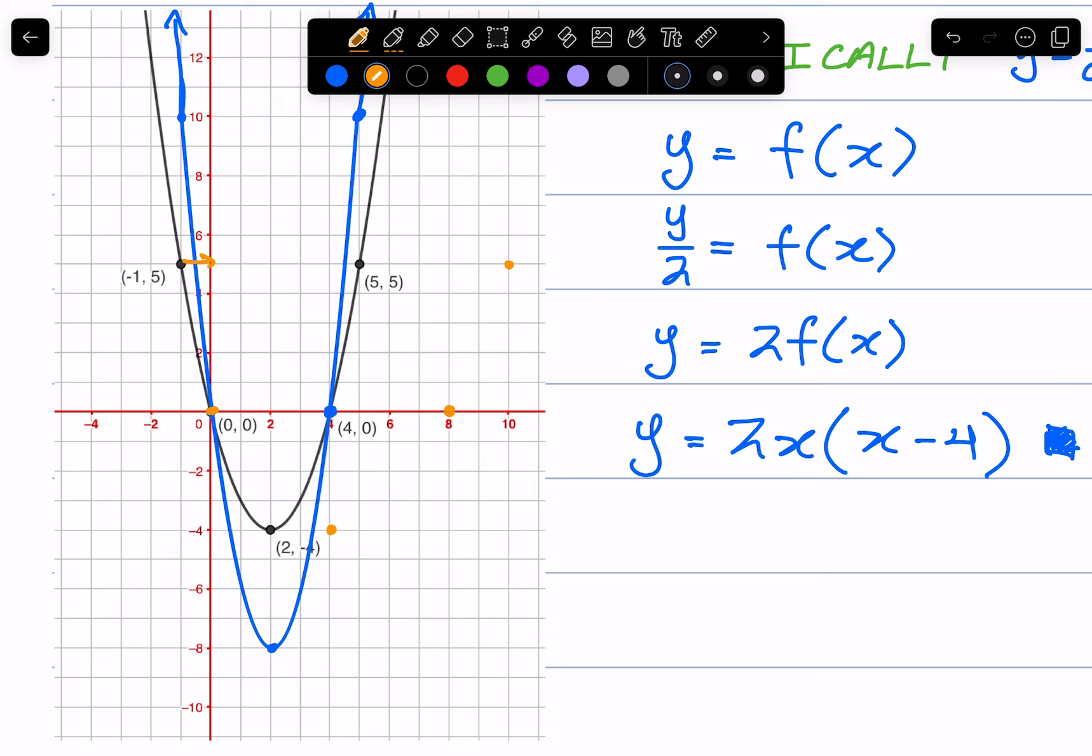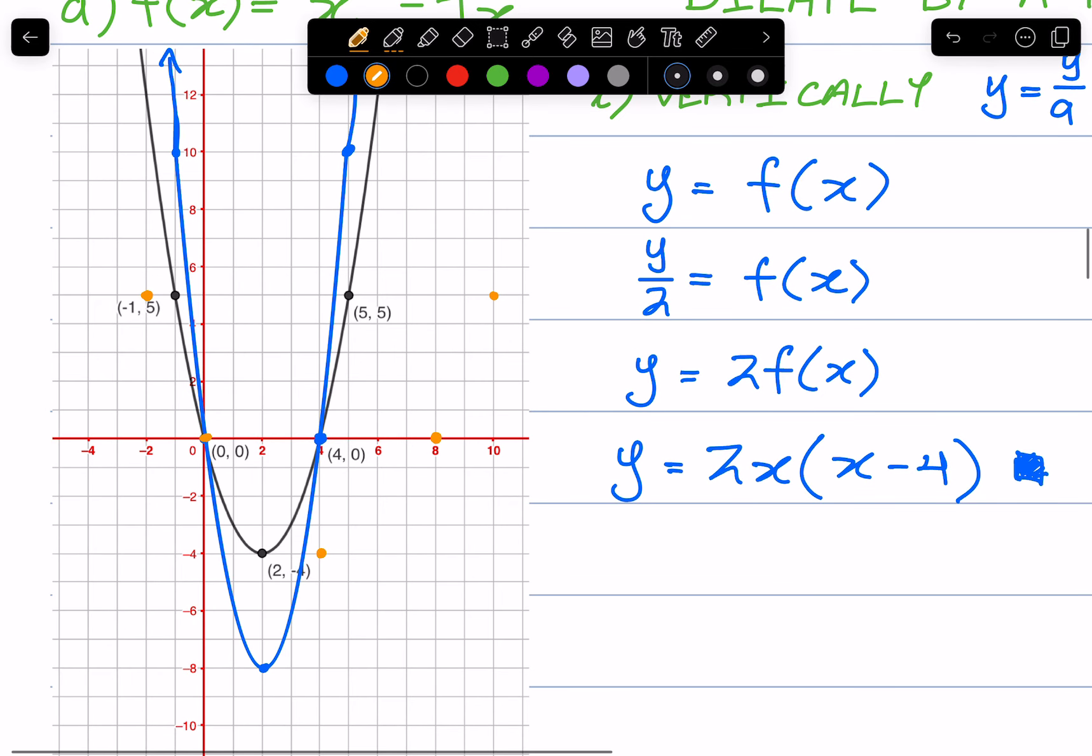And this point here, its horizontal distance is currently 1. Multiplying that by 2 becomes negative 2. So the points in orange, I hope you can see.